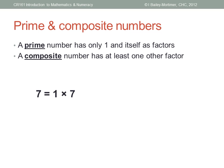For example, seven is prime. The only way to get seven by multiplying is to multiply one times seven. Its only factors are one and seven.